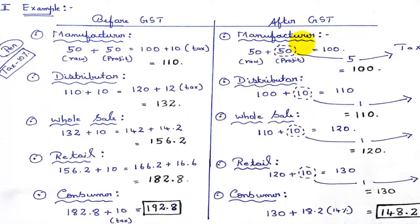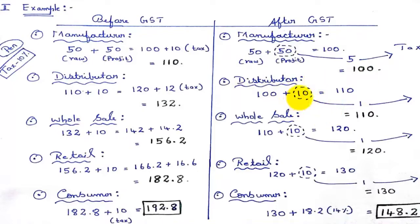After GST, the same manufacturer buys 50 rupees raw material and adds 50 rupees profit, so the value becomes 100. But now the difference is: for the 50 rupees he is adding — only on that value added amount — he will pay tax. 10% of 50 is 5 rupees tax paid to government, not on the entire 100 rupees. Earlier he paid 10 rupees tax on the full 100 rupees. Now he pays tax only on the value he added. So the value of the product remains at 100. Similarly, the distributor adds 10 rupees, and pays tax only on that 10, not on the 110. The price remains 110. Like this it goes on, and when it reaches the consumer, the price is 148.2, compared to 192.8 before GST. That is the difference GST makes — earlier it was higher, and after GST the price becomes lower.